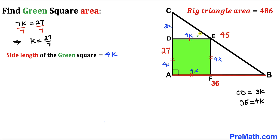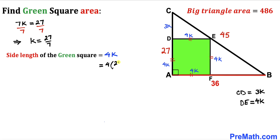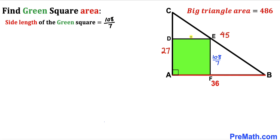The side length of the green square is 4 times K, and our K value is 27 divided by 7. Substituting, the side length equals 4 times 27 divided by 7, which gives us 108 divided by 7 units.